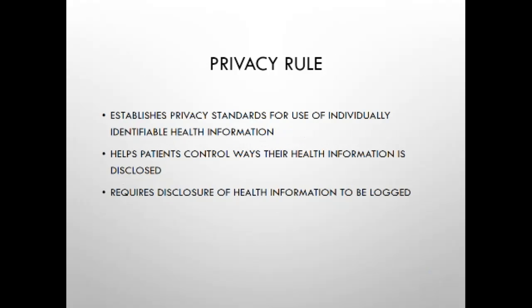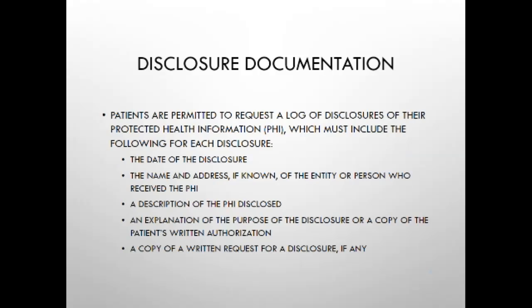The HIPAA Privacy Rule establishes privacy standards for the use and disclosure of individually identifiable health information and promotes patients' understanding of their privacy rights. Unlike other provisions of HIPAA, the Privacy Rule applies to health information in any form — in conversation, on paper, or in electronic format. The Privacy Rule, which took effect in 2003, specifies that each time personal health information is released for a purpose other than treatment, payment, or other health care operations, the disclosure must be documented in a record maintained for six years.